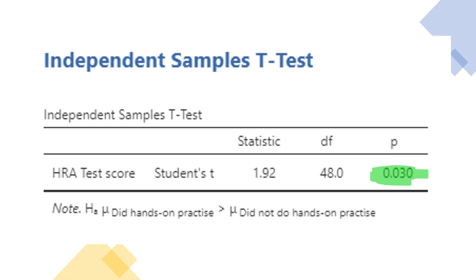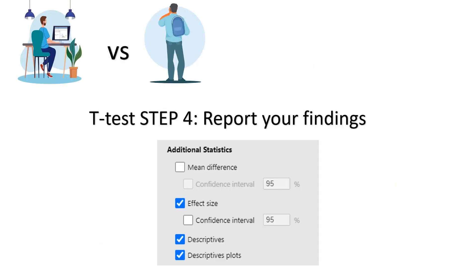We check our p-value and we see that it's significant. Step four, report your findings. We can do this more accurately by using the descriptives function in Jamovi.